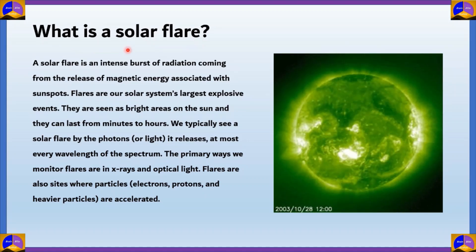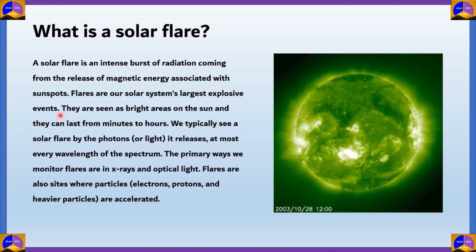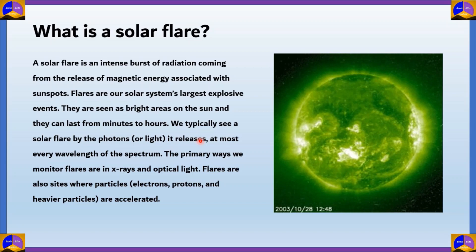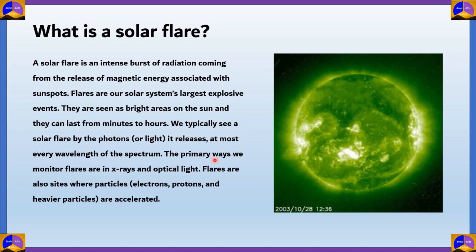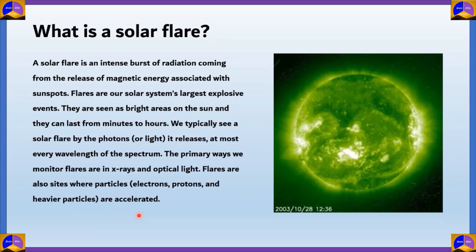What is a solar flare? A solar flare is an intense burst of radiation coming from the release of magnetic energy associated with sunspots. Flares are our solar system's largest explosive events. They are seen as bright areas on the sun and they can last from minutes to hours. We typically see a solar flare by the photons or light it releases at most every wavelength of the spectrum. The primary ways we detect a solar flare are X-rays and optical light. Flares are also sites where particles such as electrons, protons, and heavier particles are accelerated. Basically, it's a burst of radiation that is energy coming from the sun — that's what we call a solar flare.